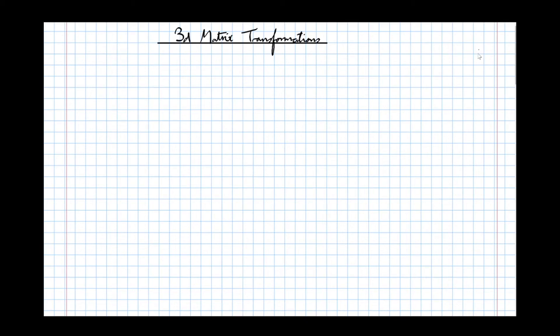In this video we're going to have a look at the different types of 3D matrix transformations that can be performed. Before we look at the actual transformations themselves, it helps to look at the 3D coordinate system that's used. The three axes are labelled X, Y and Z as you'd expect, but the directions of the axes are a little bit different than you'd expect.